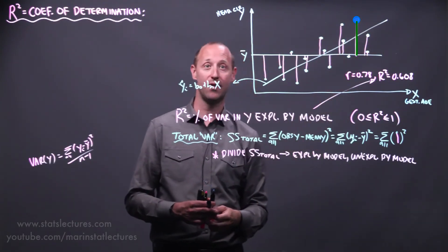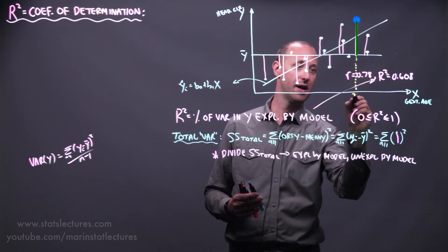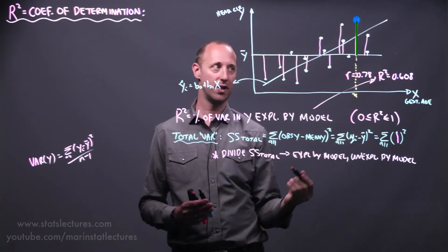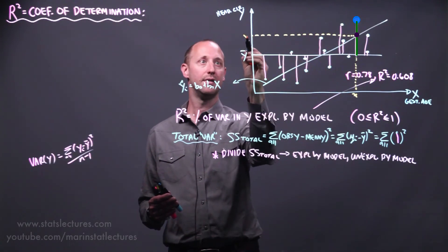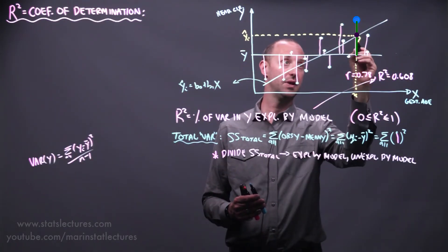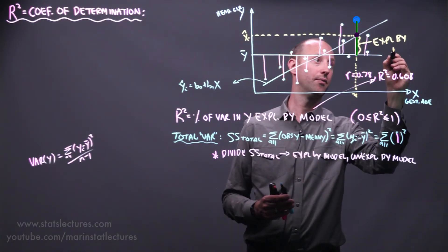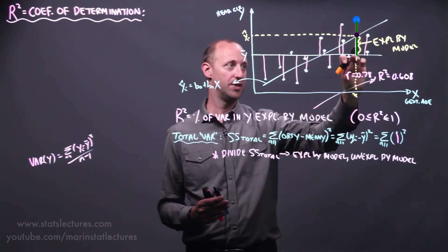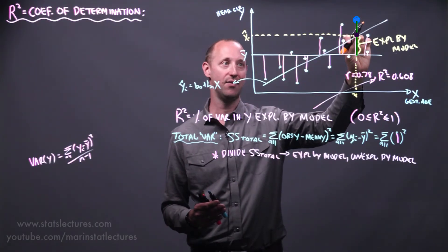We can see this total distance can be divided into two parts. For this person, with this particular x-value, we wouldn't expect them to have the average head circumference — their gestational age is older than average. Our model would predict them to have this head circumference here. So we can explain this portion — this is explained by the model. Out of the total variability, we'd say they shouldn't be sitting on the overall mean; they should be at the mean of y given x.